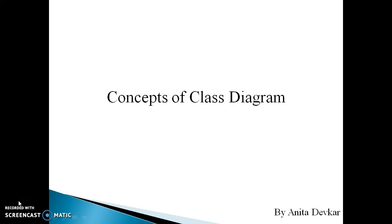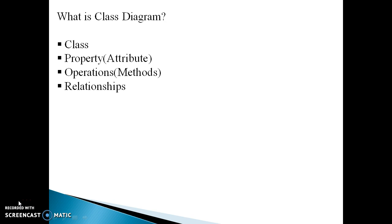Hello and welcome to this session on concepts for drawing the class diagram. A class diagram is a type of static structure diagram that describes the structure of the system by showing the system's classes, their attributes, operations, and relationships among the objects. Or we can say a class diagram is a collection of classes, properties, operations, and the relationships among the classes.